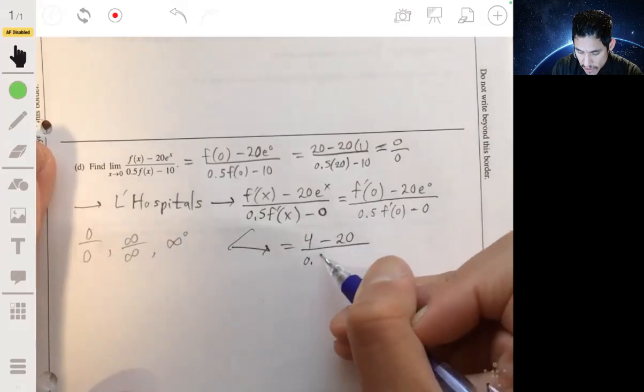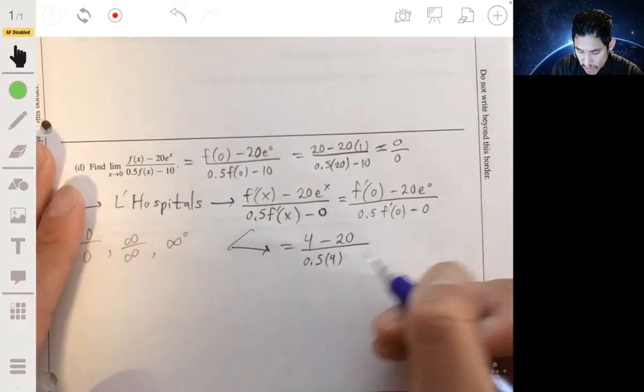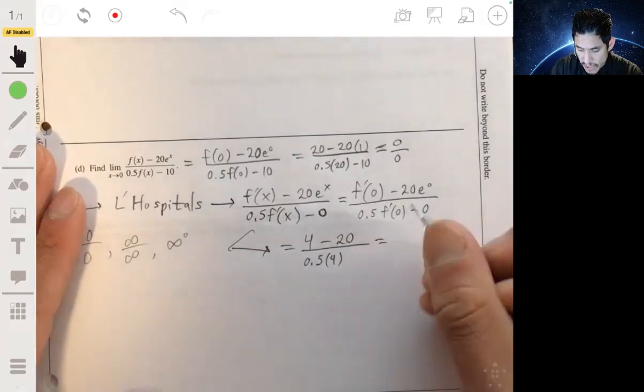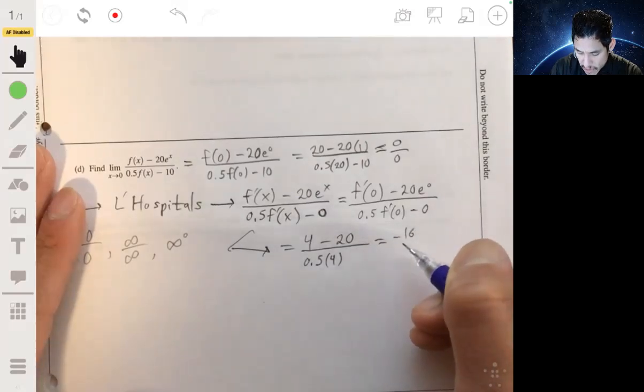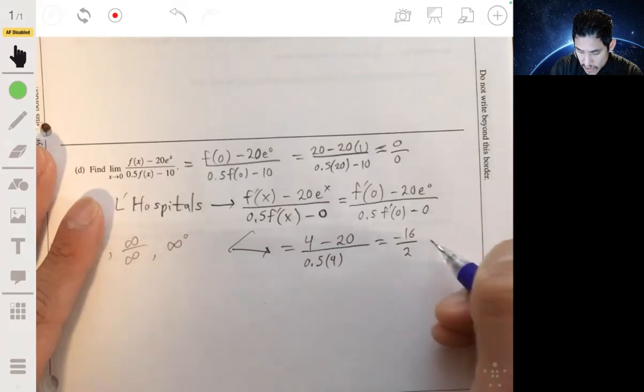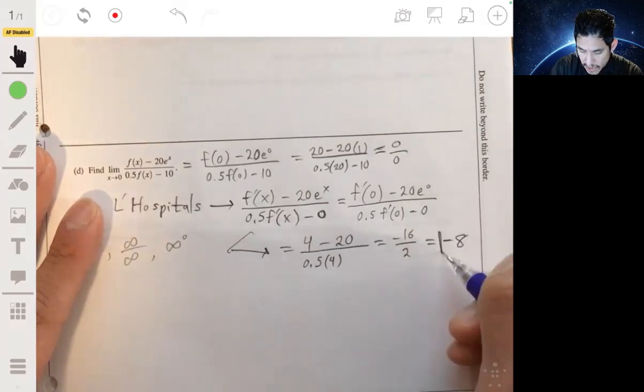Over 0.5 times 4. The 0 doesn't matter. So we get negative 16 over 2 and our answer is just negative 8.